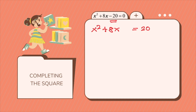Then we find a term that completes the square on the left side of the equation. Using the middle term's number, we divide it by 2: 8 divided by 2 gives you 4. Then we square that answer, which gives us 16. Hence, the number that we have to add on both sides of the equation will be 16.